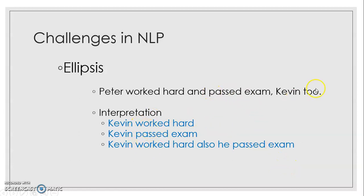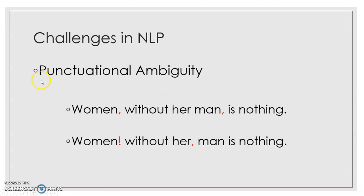Another important challenge is punctuational ambiguity. For example, consider: 'Woman without her man is nothing' — meaning a woman cannot do anything alone. But with different punctuation: 'Woman, without her, man is nothing' — meaning a man cannot do anything without the support of a woman. The meaning of the sentence is completely changed just by punctuation placement. This is called punctuational ambiguity.